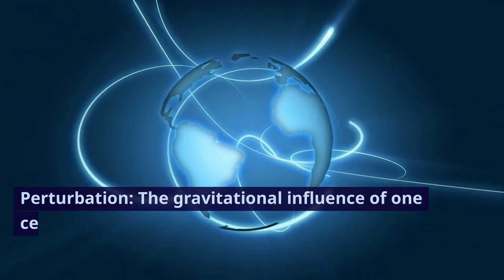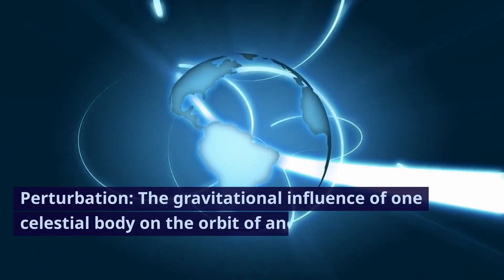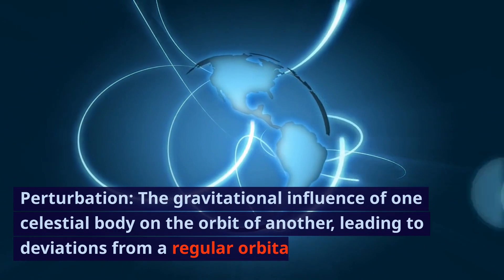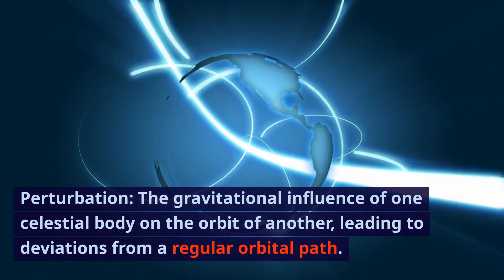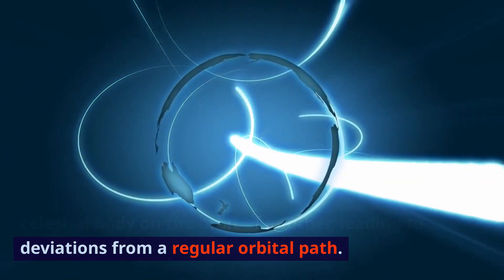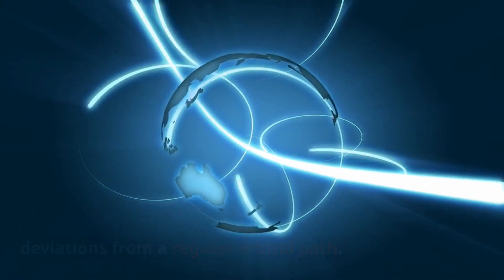Perturbation: the gravitational influence of one celestial body on the orbit of another, leading to deviations from a regular orbital path.